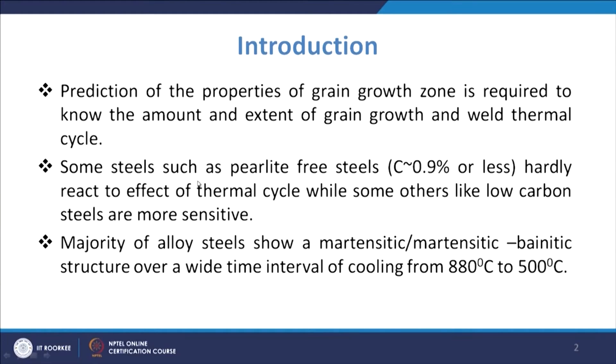The majority of steels will show martensitic and martensitic-bainitic structures over a wide interval from 800 to 500 degrees centigrade during cooling. The next important property to consider is toughness. When you do welding, the weld metal zone is at high temperature, and heat dissipates towards the heat affected zone and the base metal zone, leading to various microstructural changes including changes in grain sizes, which affect toughness.